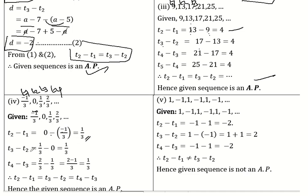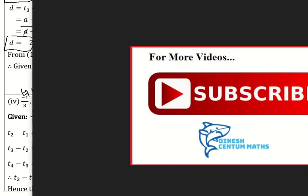Term 3 minus Term 2 is (1/3) minus 0 equals 1/3. Term 4 minus Term 3 is (2/3) minus (1/3) equals 1/3. All differences are equal, so this given sequence is an AP. Subscribe to this channel.